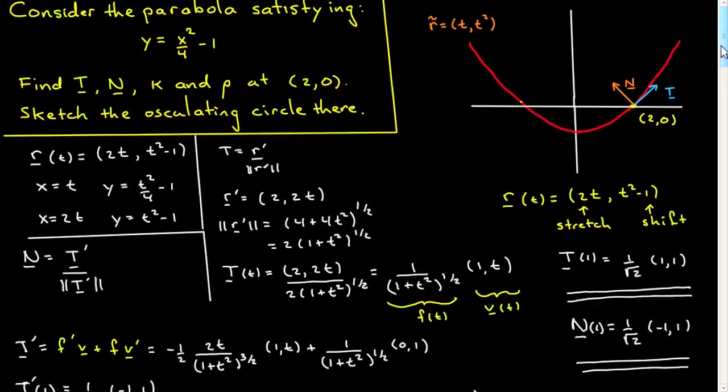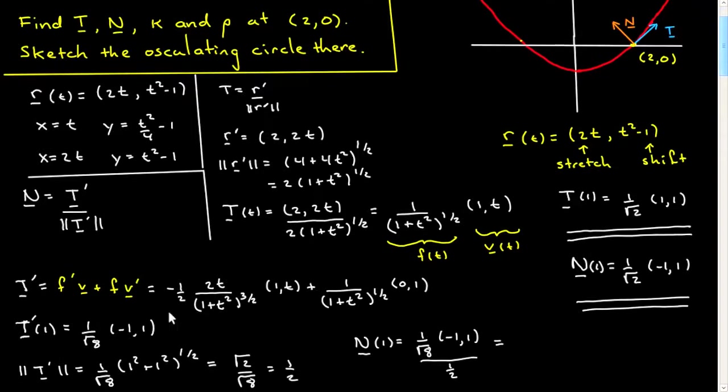And these are things that we previously computed up above. We've computed the derivative of the tangent, we've done that at 1, we found its magnitude which is a half. We also have the norm of the derivative of the parameterization. And you can just therefore plug in, and I will just do it.